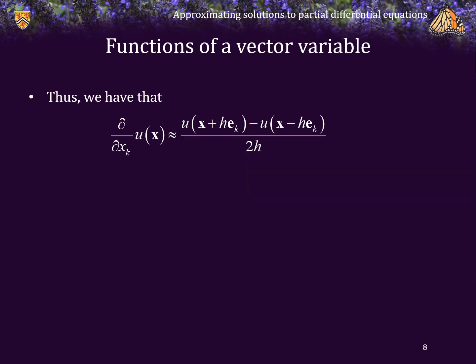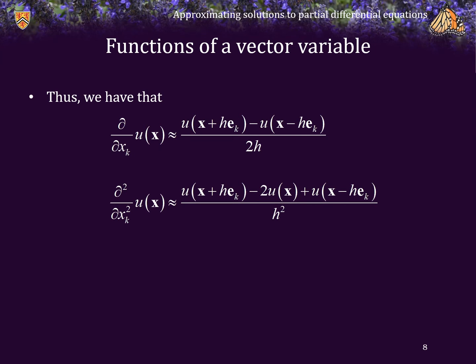From a linear algebra perspective, the partial of the function u with respect to the kth variable is simply u evaluated at x + h·e_k minus u evaluated at x − h·e_k, all over 2h. We have a similar definition for the second partial derivative — in both cases we evaluate at x + h·e_k and x − h·e_k.